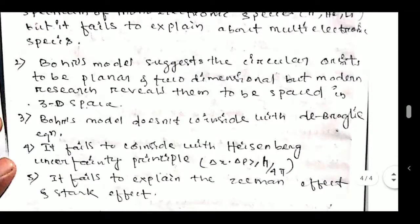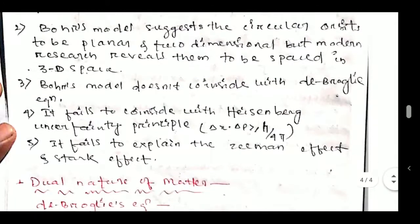Third limitation: Bohr's model does not coincide with de Broglie's equation and also fails to satisfy Heisenberg's uncertainty principle, which states: Δx × Δp ≥ h/4π. Bohr's atomic model cannot satisfy both de Broglie's equation and Heisenberg's uncertainty principle.